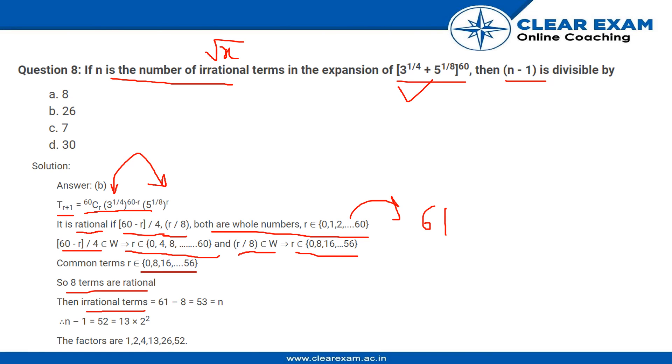So n = 53 and n - 1 = 52. 52 = 13 × 2², so the factors are 1, 2, 4, 13, 26, and 52.